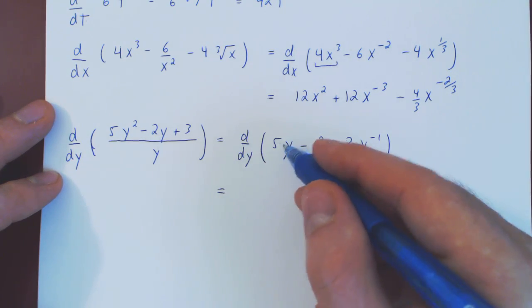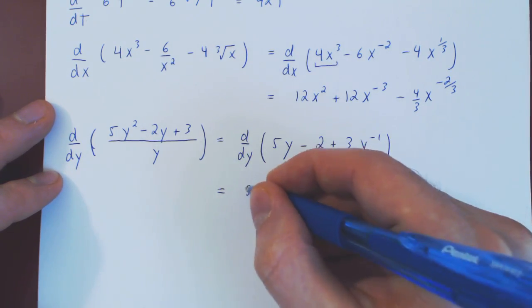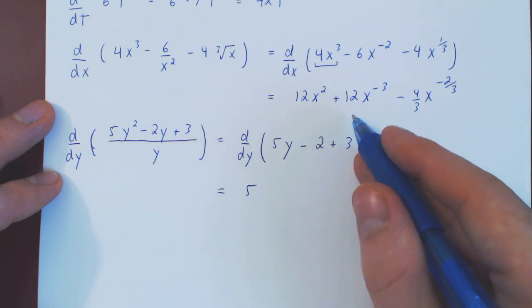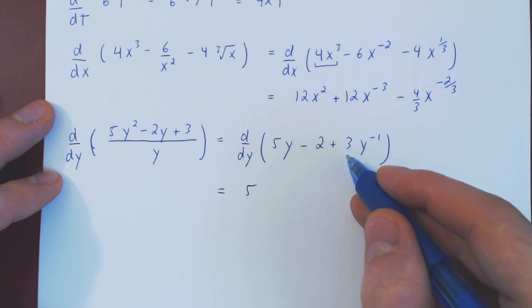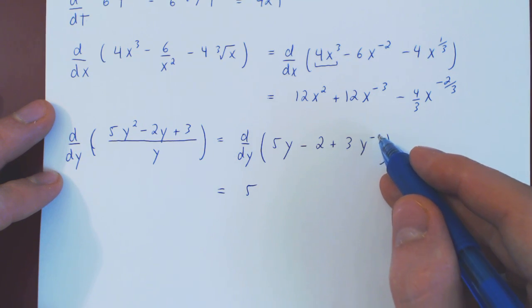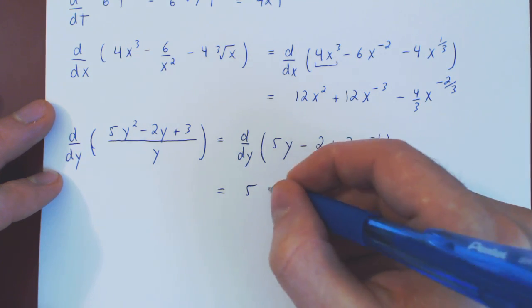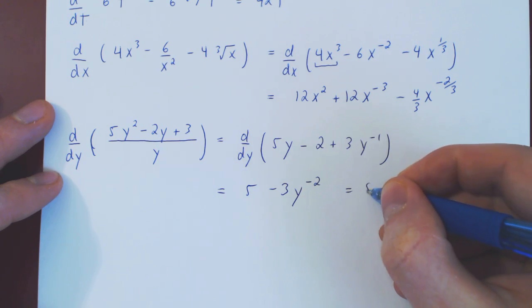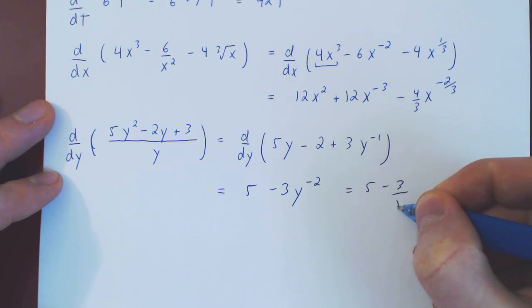The derivative of 5y with respect to y is 5. The derivative of a constant with respect to y is 0. Plus the derivative of 3 times y to the negative 1, power rule, negative 1 times 3 is negative 3. The derivative of y to the negative 1 minus 1 is negative 2. And of course you can write this as 5 minus 3 over y squared.